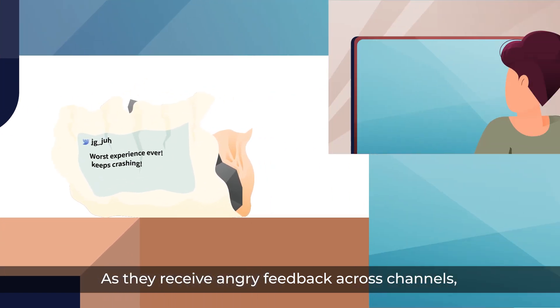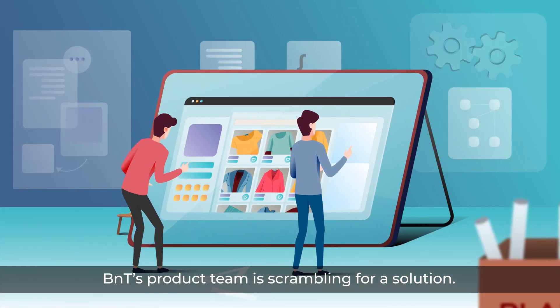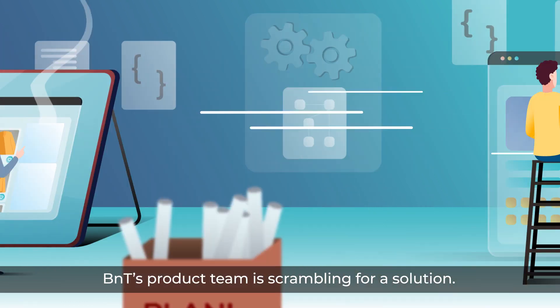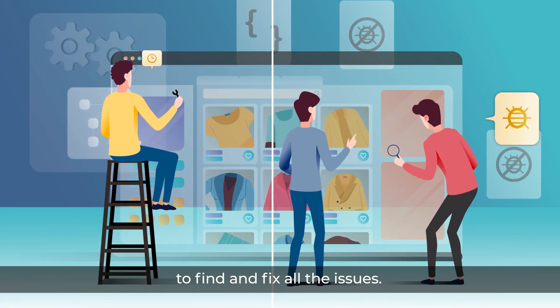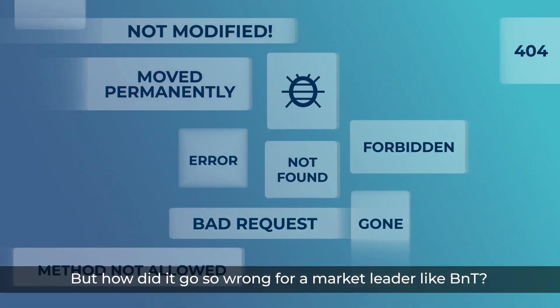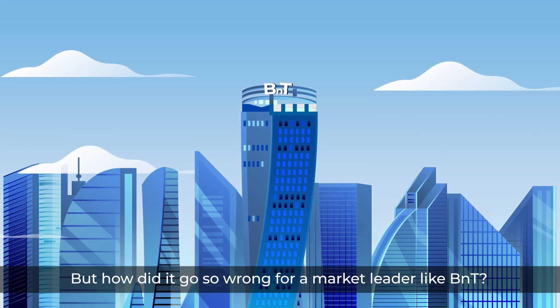As they receive angry feedback across channels, B&T's product team is scrambling for a solution. The development and QA teams are working under huge pressure to find and fix all the issues. But how did it go so wrong for a market leader like B&T?